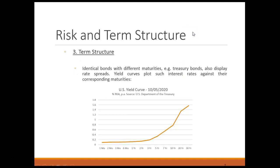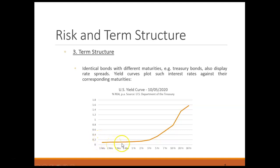For instance, this graph illustrates the yield curve for US treasuries as of October 5th, 2020. A yield curve is the most common tool to illustrate a term structure and plots different maturities on the x-axis against the respective yields on the y-axis. The treasury in early October paid about 0.1% on a one-month or two-month bond, while they paid about 0.6% on a 10-year bond.